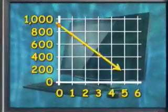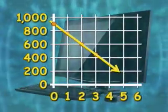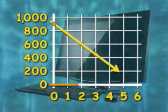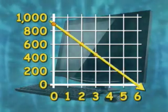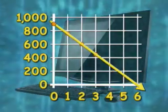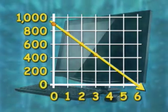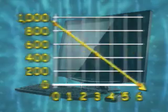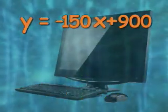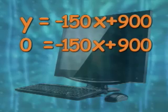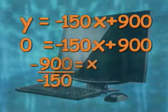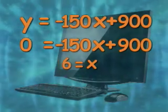For example, on this graph we could determine at what point the computer would no longer have any value. That would be the point where the line crosses the X-axis, because at that point the cost along the Y-axis is zero. That point is called the X-intercept. Algebraically, you could determine that point by setting Y equals zero and solving for X. In this case, X equals six — so in six years, this computer will be worthless.